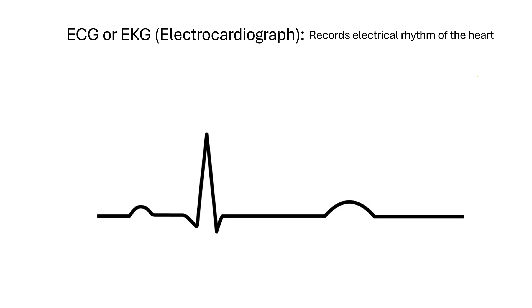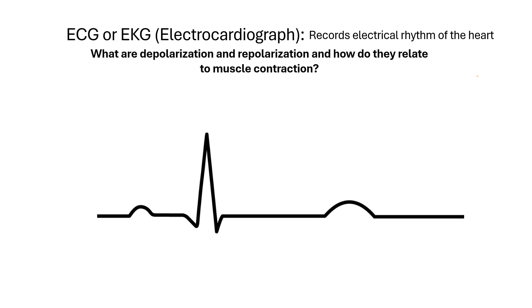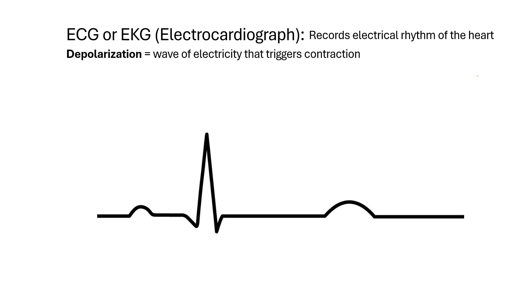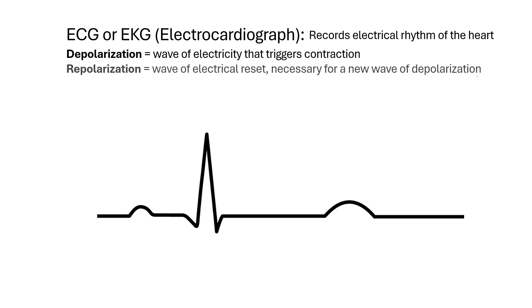What are depolarization and repolarization, and how do they relate to muscle contraction? Depolarization is a wave of electricity that triggers contraction, while repolarization is a wave of electrical reset, and it is necessary for a new wave of depolarization to occur.